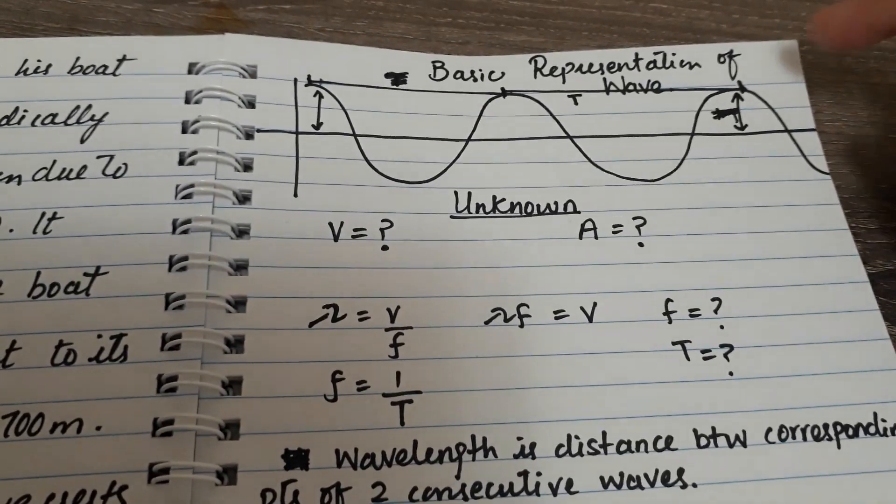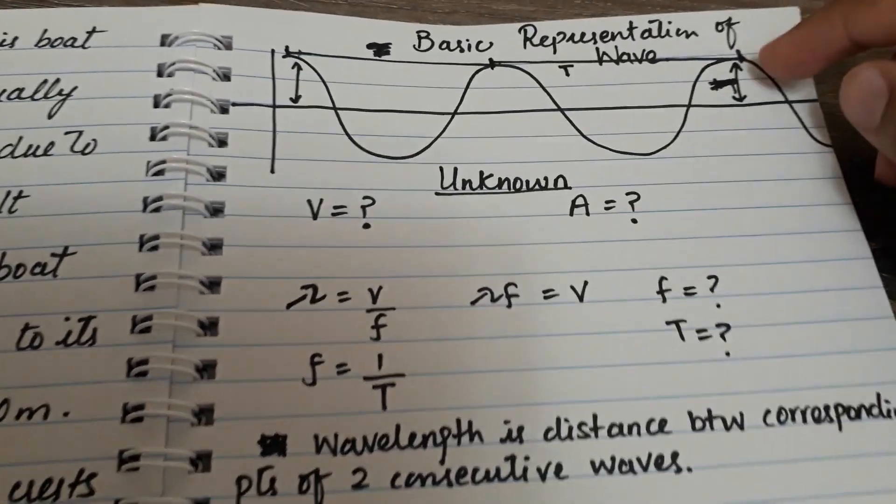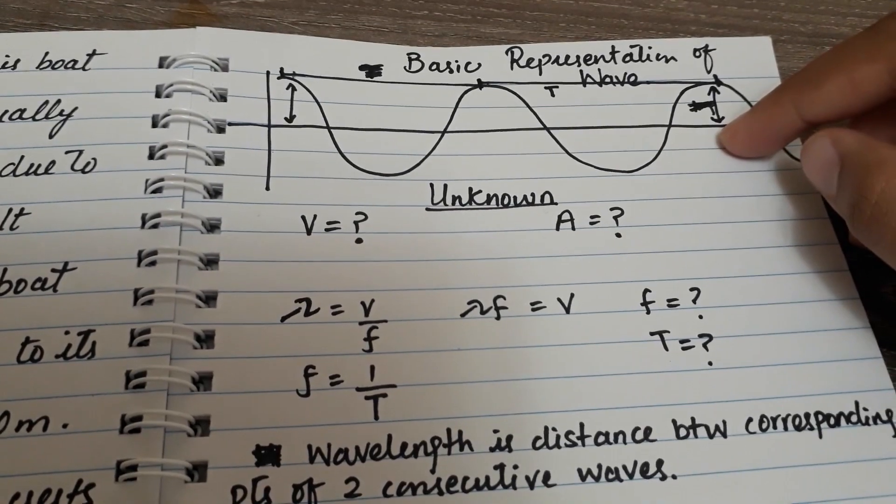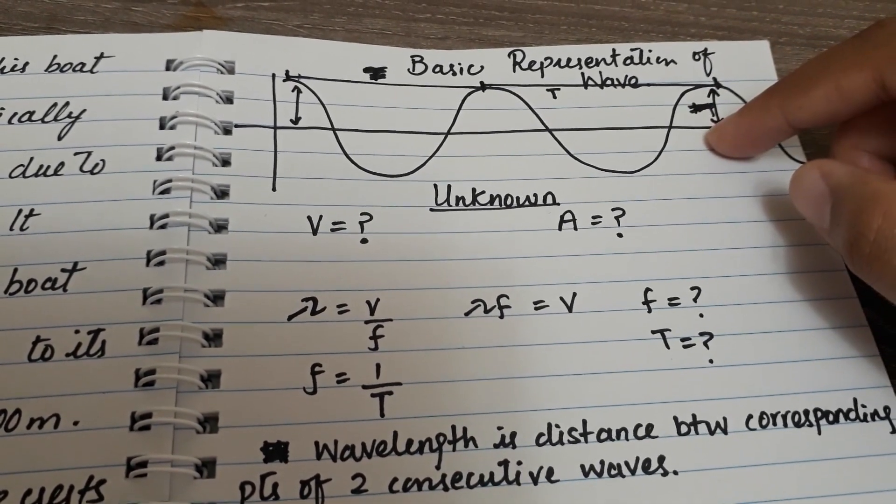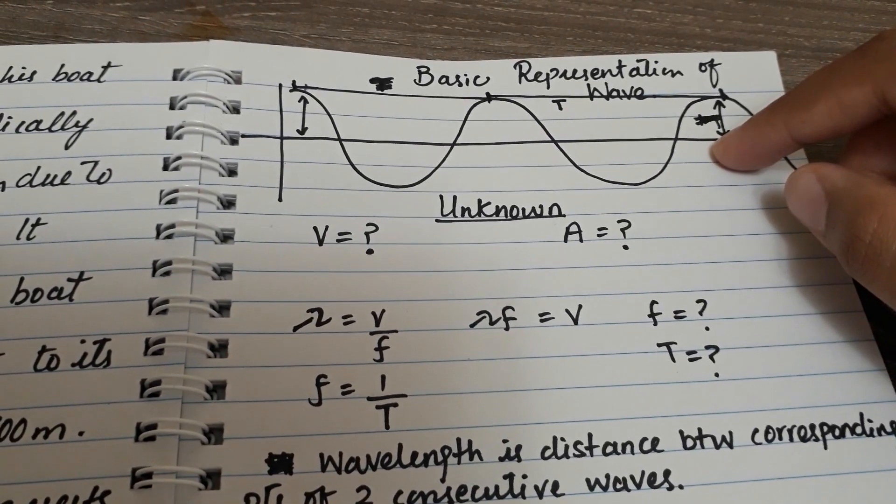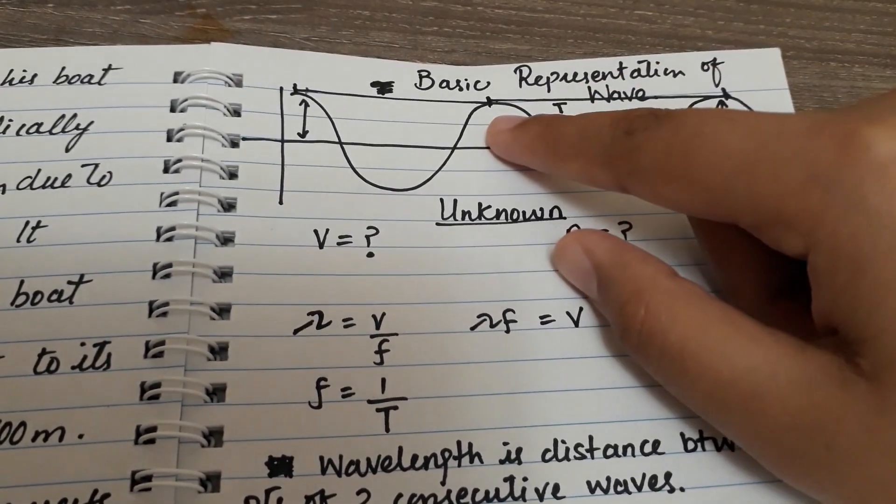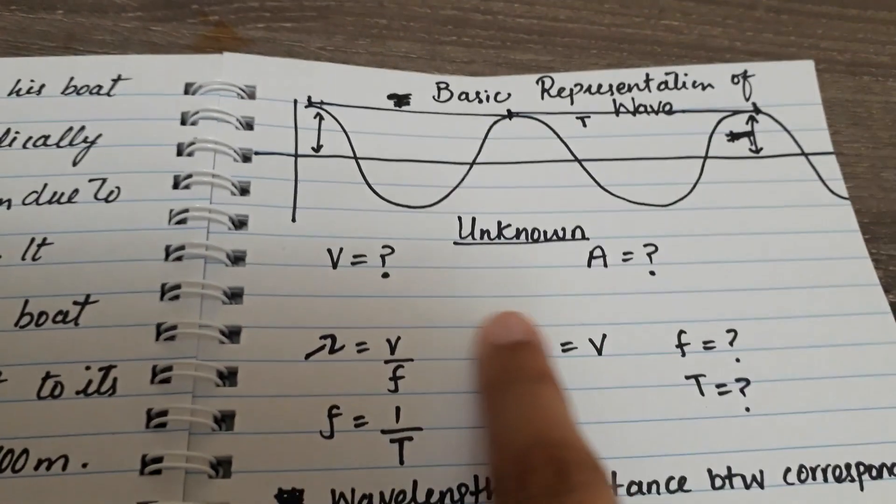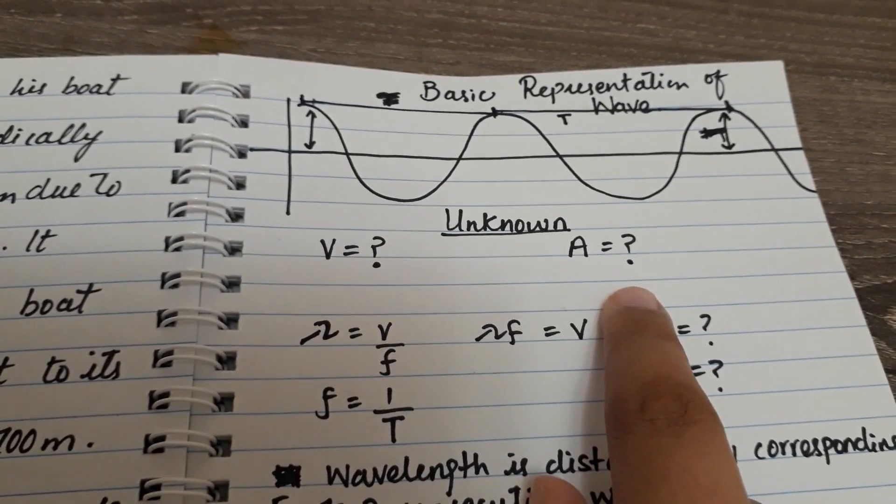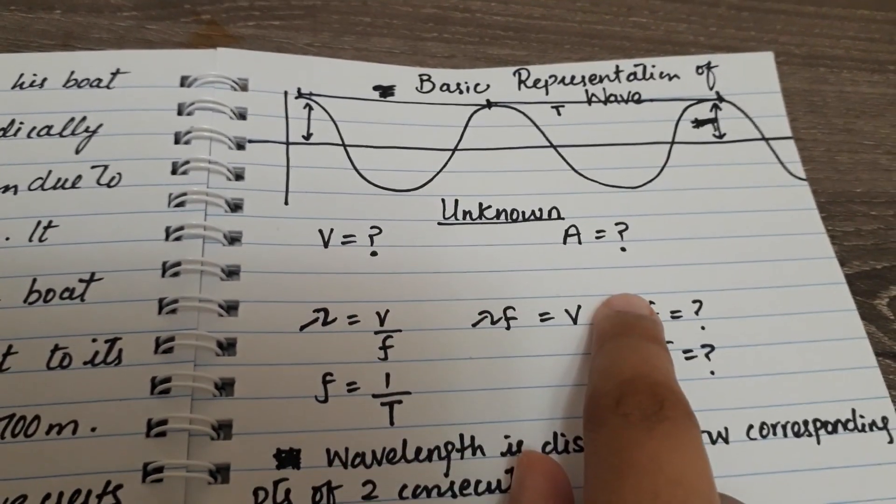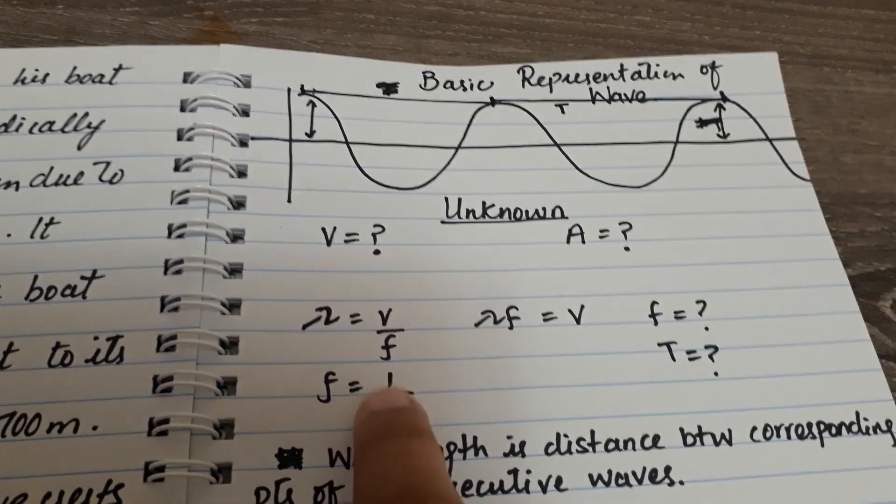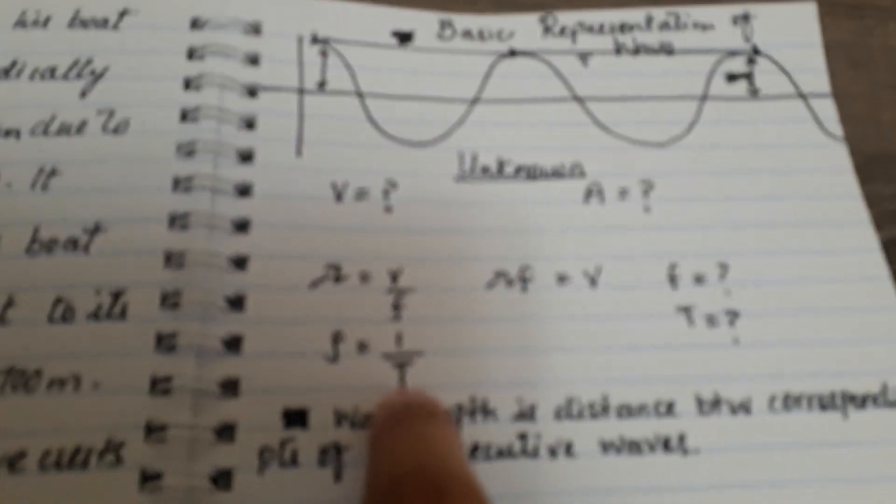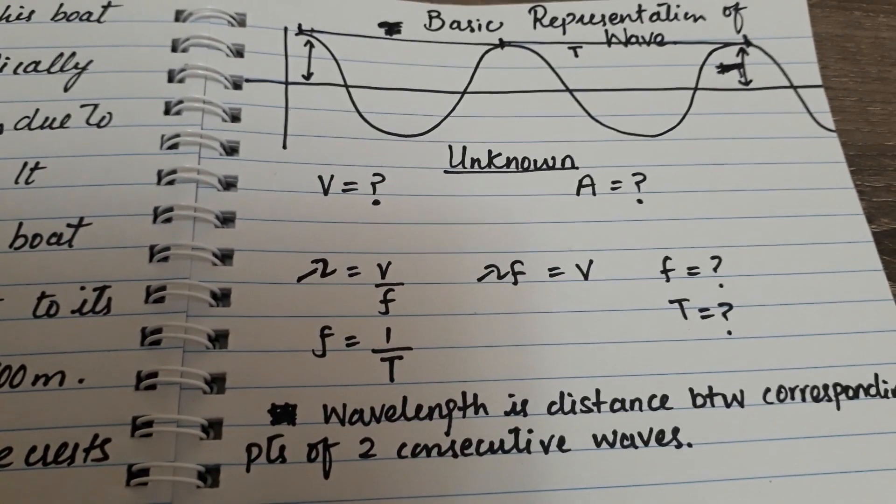The period is from crest to crest. So I have to find the speed of the wave and the amplitude. I already have these basic equations which you should have in your formula sheet.